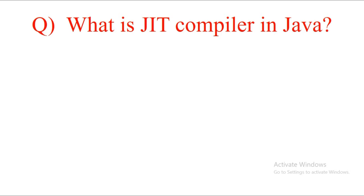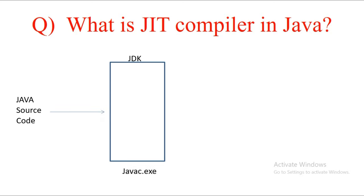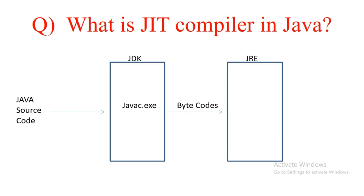The third question is: what is JIT compiler in Java? If you have a Java source code, the JDK contains javac.exe, which is a compiler. This compiler converts your code to bytecode. Once you have bytecode, it goes into the JRE or JVM, which contains two things: an interpreter and a Just-In-Time (JIT) compiler. The bytecode makes your Java code completely machine-independent. JDK and JRE are machine-dependent, but bytecodes do not depend on any underlying operating system.